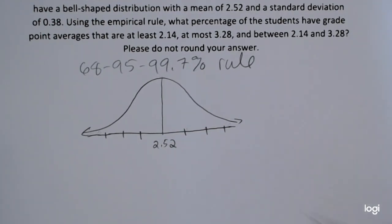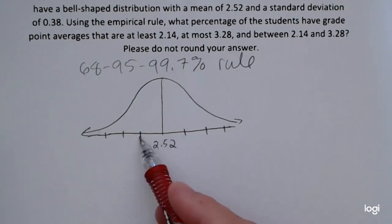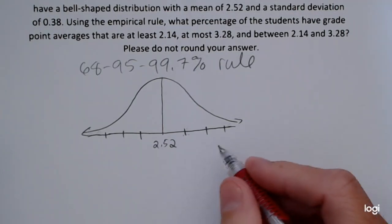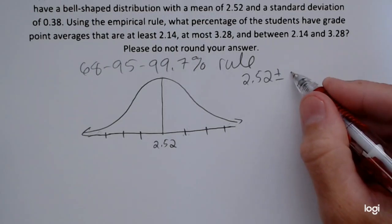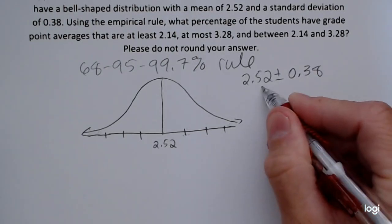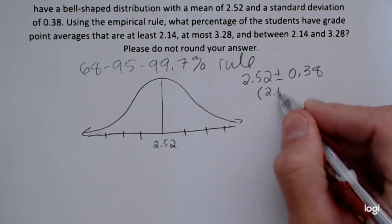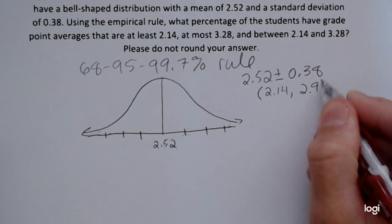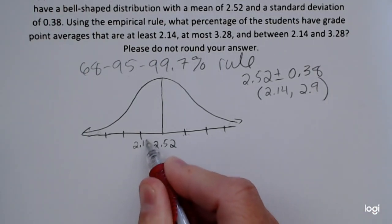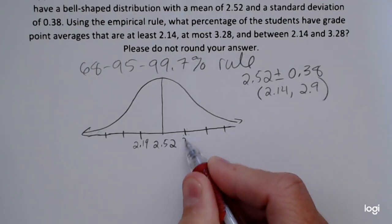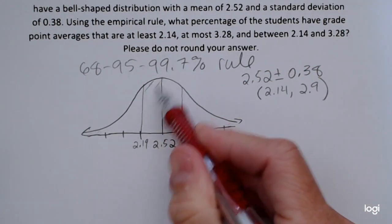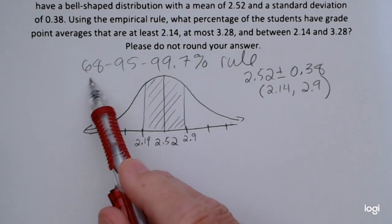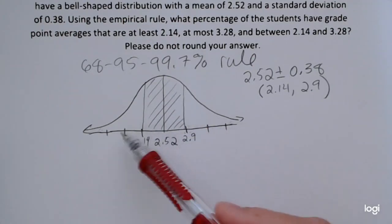I want to find the values that contain 68% of the data — that would be one standard deviation away from the mean. I'm going to take the mean and add and subtract one standard deviation of 0.38, giving me the interval from 2.14 up to 2.90. Using the empirical rule, this interval contains about 68% of the total area under the curve.